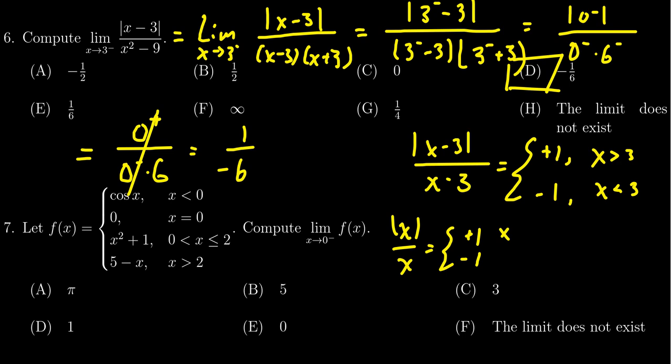When x is greater than 0, it gives you plus 1. And when x is less than 0, it gives you negative 1. That's what happens when you see this ratio involving the absolute value.